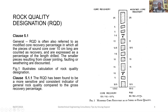The resulting Rock Quality Designation RQD value is therefore 85 divided by 150, which gives approximately 57 percent. Clause 5.1.1 states that the RQD has been found to be a more sensitive and consistent indicator of general rock quality compared to the gross recovery percentage.